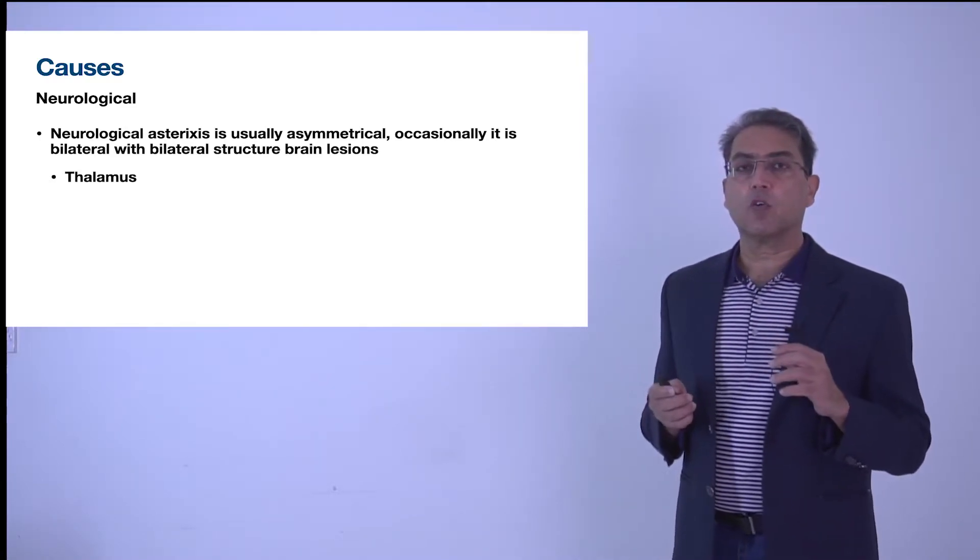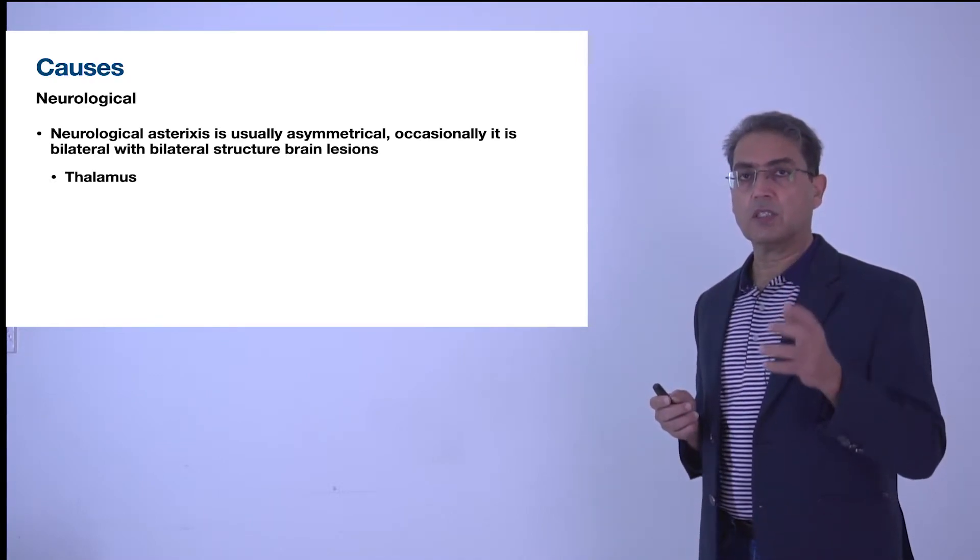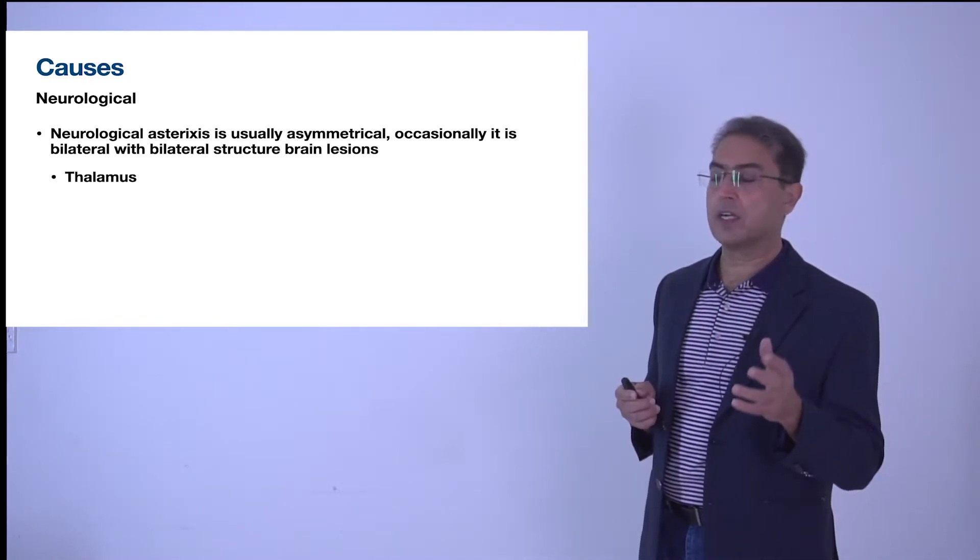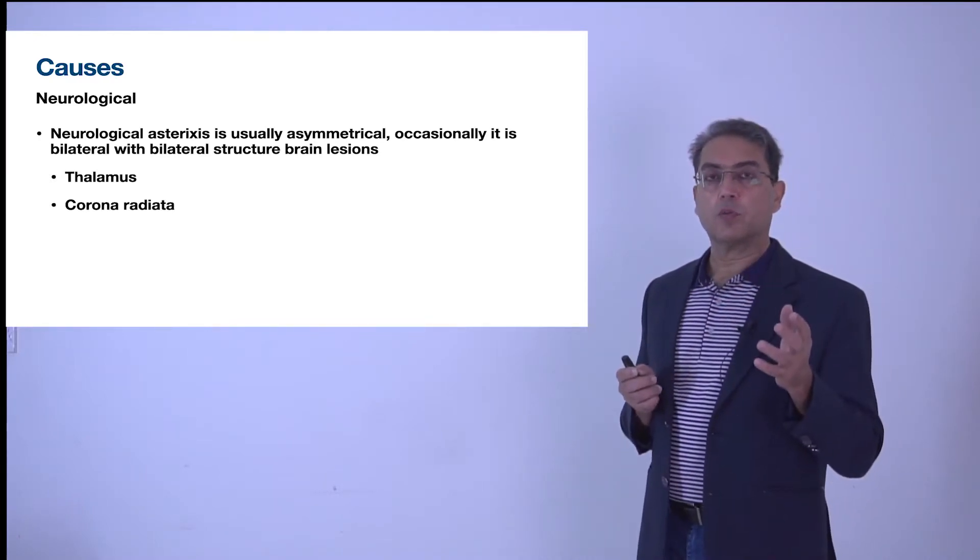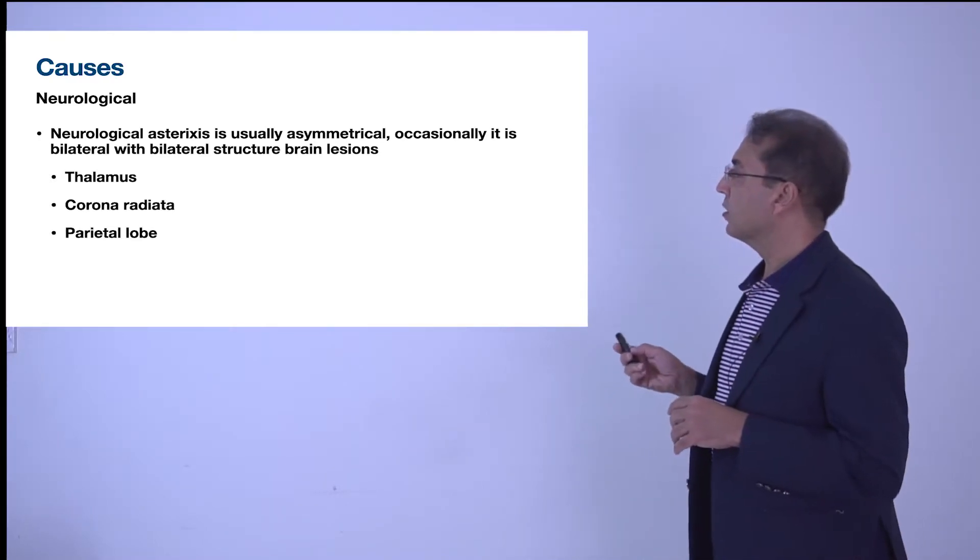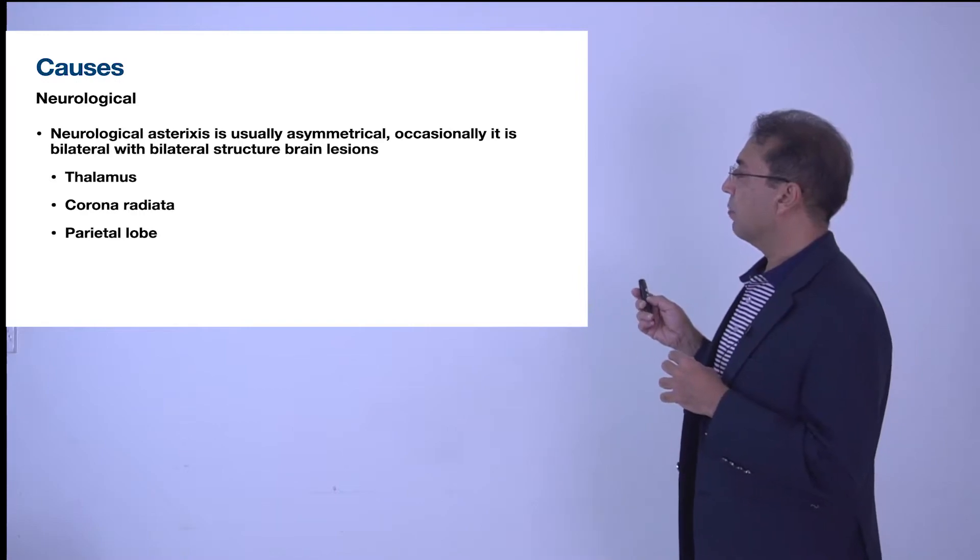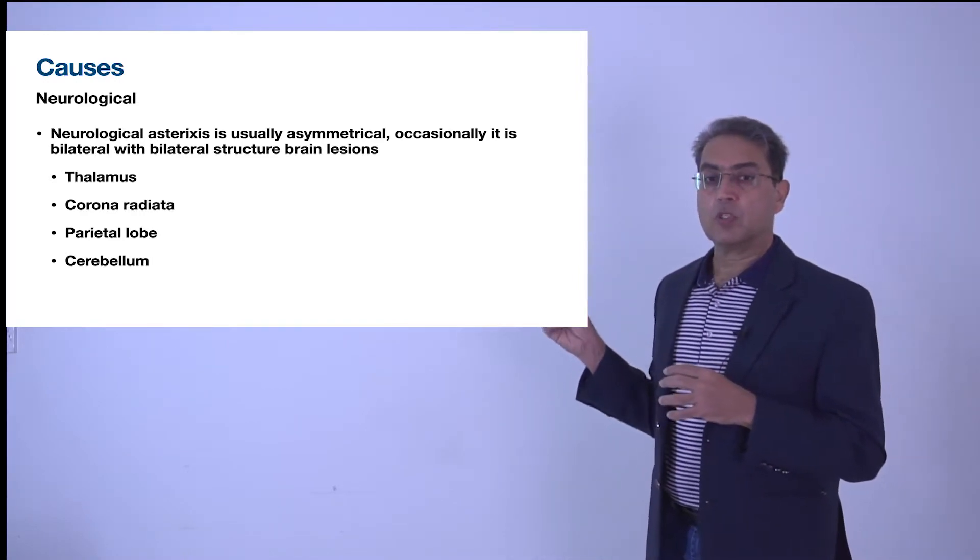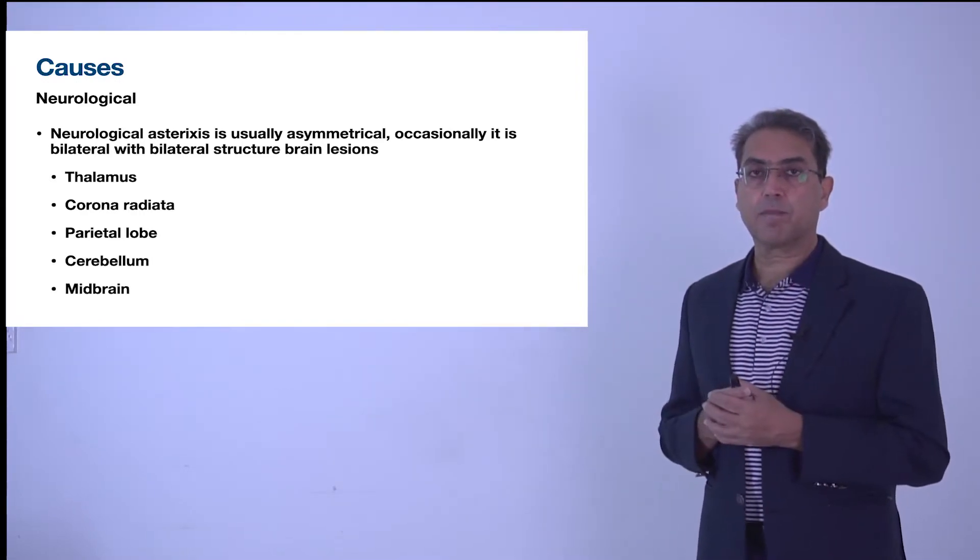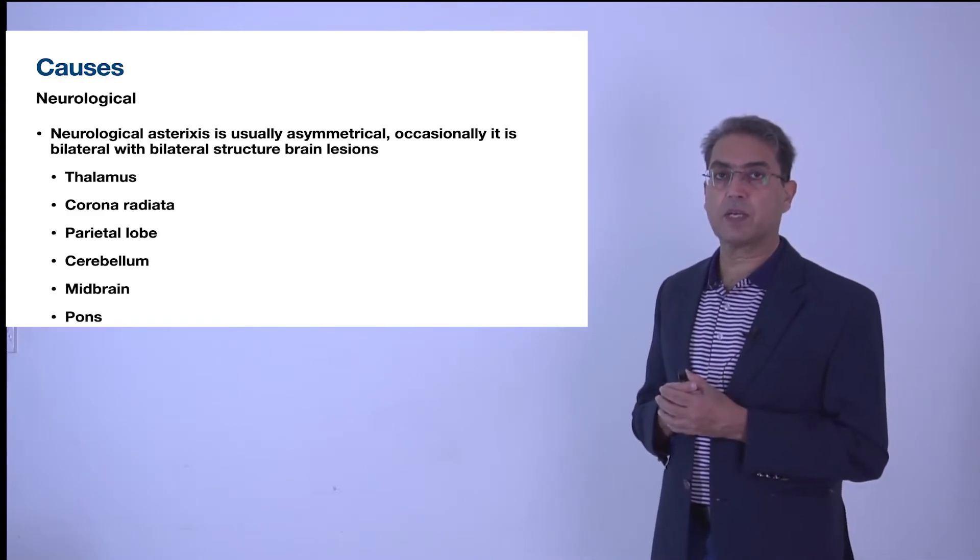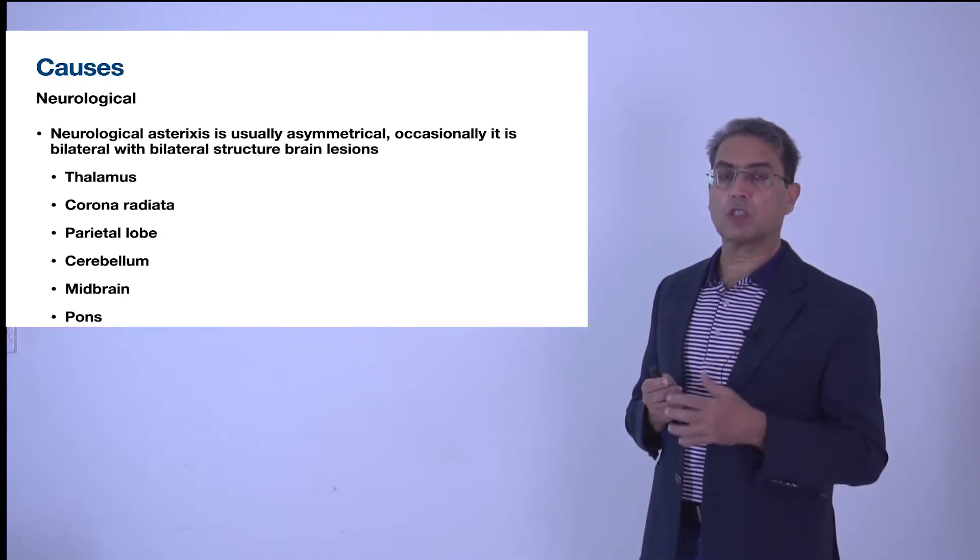What are the neurological causes? Diseases in the thalamus, the corona radiata, and the parietal lobe, sometimes also in the midbrain or pons, can result in this flapping tremor. These are usually neurological causes.